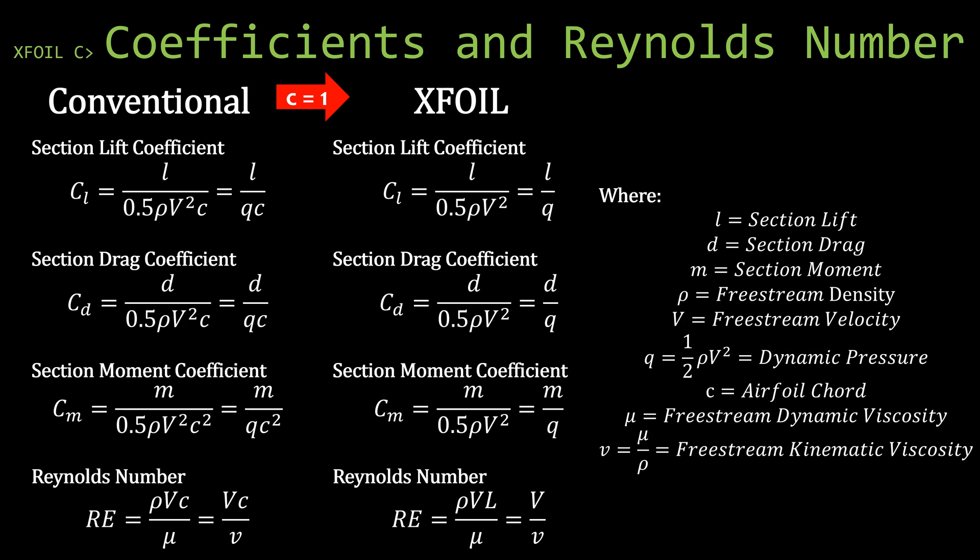Now on to the assumption that XFOIL makes. When XFOIL is calculating these section coefficients, it assumes that the chord is equal to one, which essentially drops c out of all of the equations. I'm not 100% sure why it does this, but I assume it's because outside of conventional airfoils, the idea of a chord is kind of arbitrary and hard to define for irregular shapes. This is fine unless you imported an airfoil that did not have a chord of one, or you scaled the airfoil to a chord length other than one.